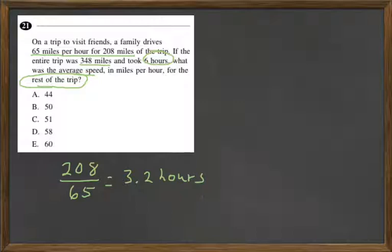Well, if we subtract 3.2 from 6, so we'll have 6 hours total and subtract 3.2 from that, that's going to equal 2.8 hours.